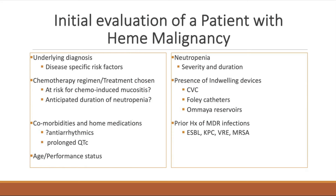Know if there is a prior history of multidrug-resistant infections — specifically ESBL or CRE gram-negative rods, VRE, and MRSA. For MDR gram-negative rods, we look at the outside hospital database and Moffitt records, going back five years. Each patient admitted to the heme or BMT floor is screened with VRE and MRSA swabs.